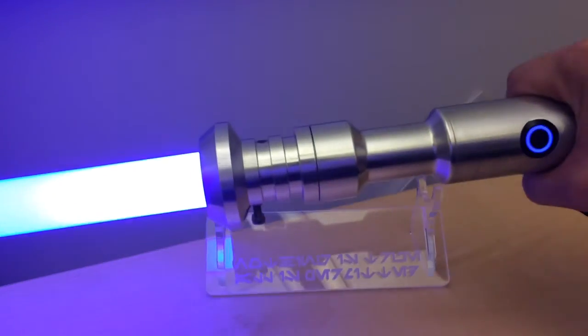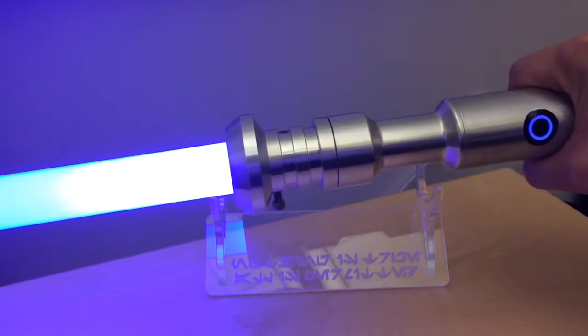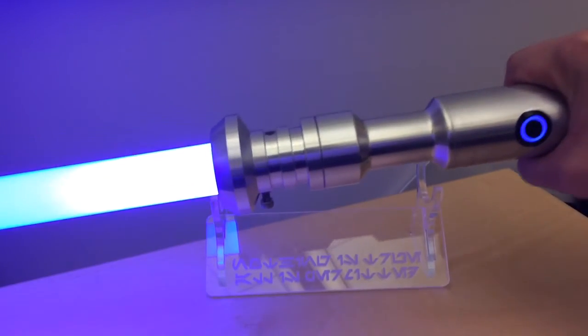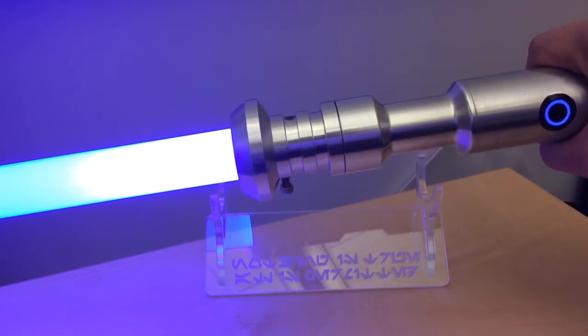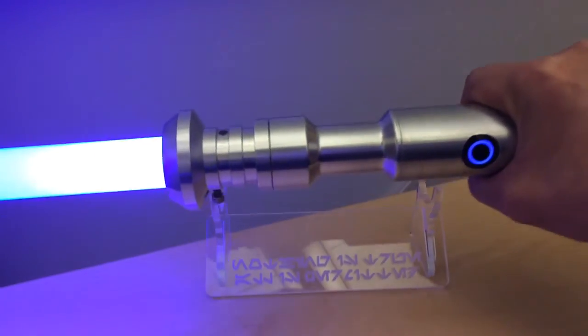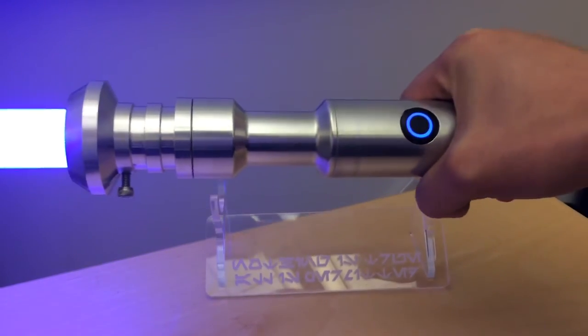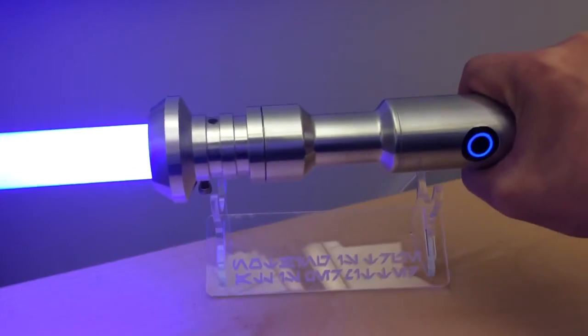The sound font I'm using is a rogue sound font by Matt Cabe. And you can get that at saberfont.com. And all these parts I got from the custom saber shop, which is basically your one stop place for lightsaber parts.